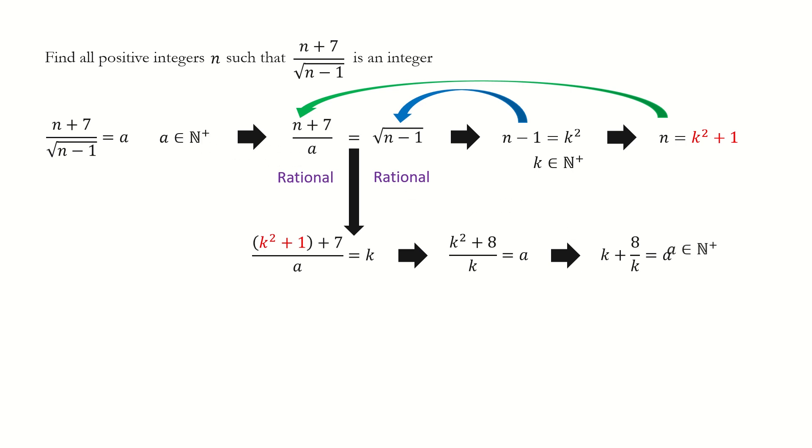Because a is a positive integer, the left-hand side must be a positive integer. So this term, 8 over k, must be an integer. Therefore, we only have four possibilities for k, which are 1, 2, 4, and 8.